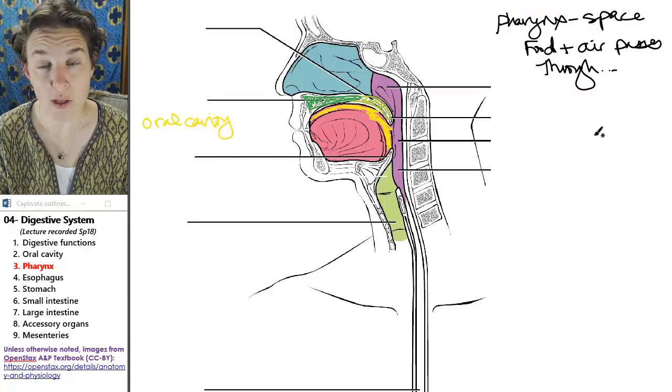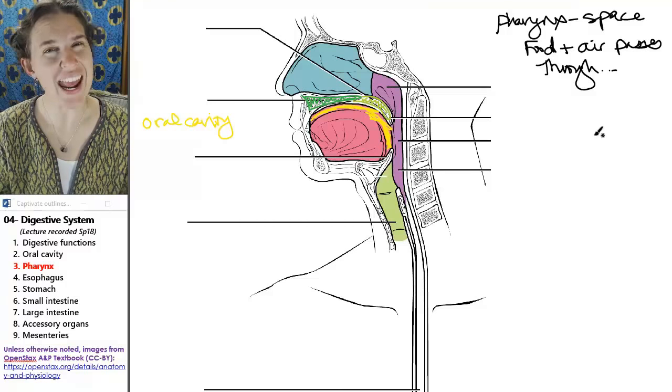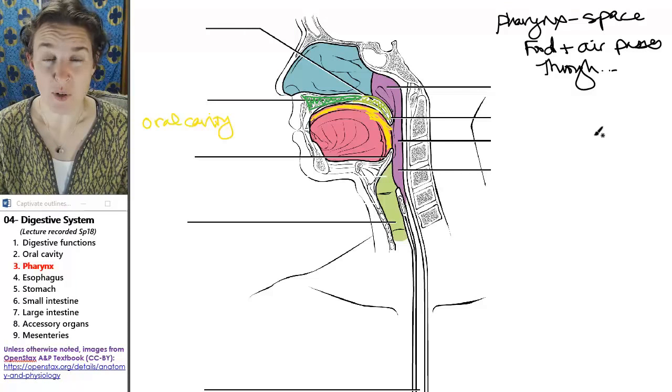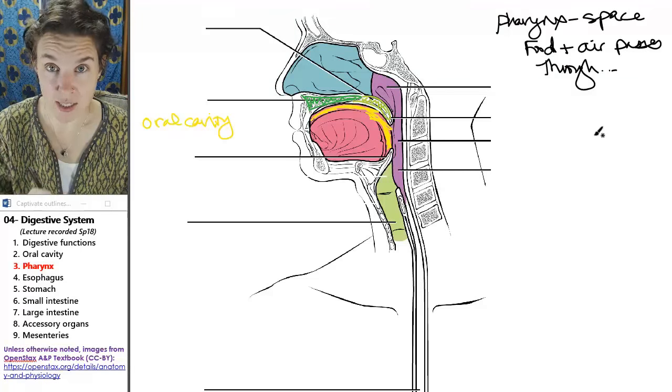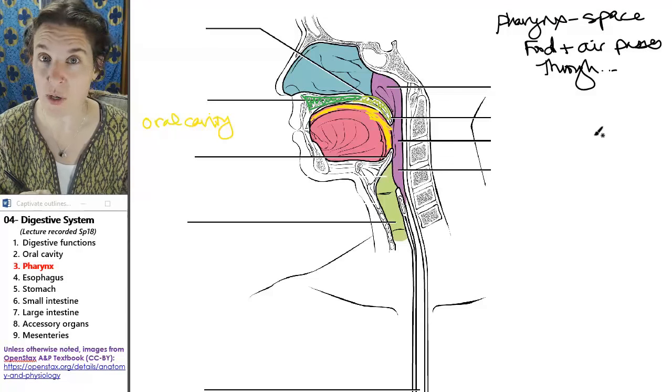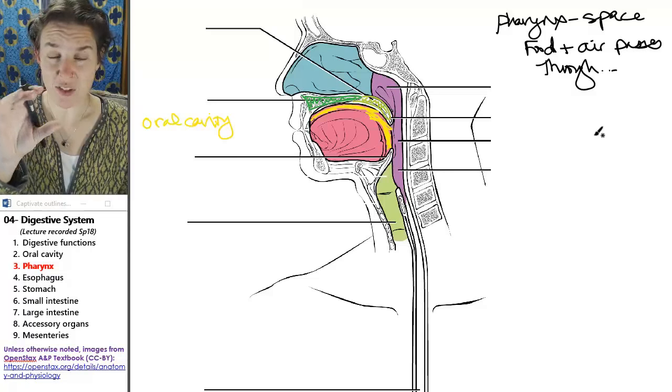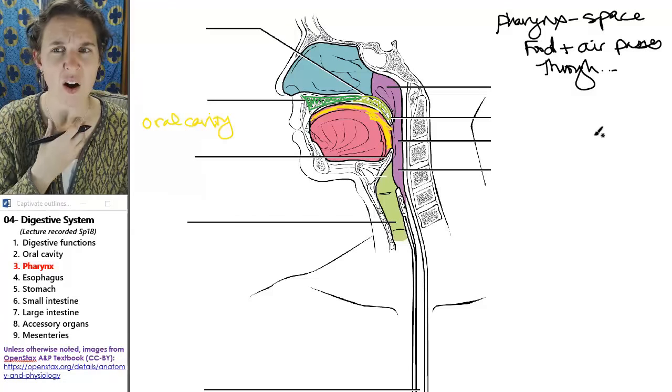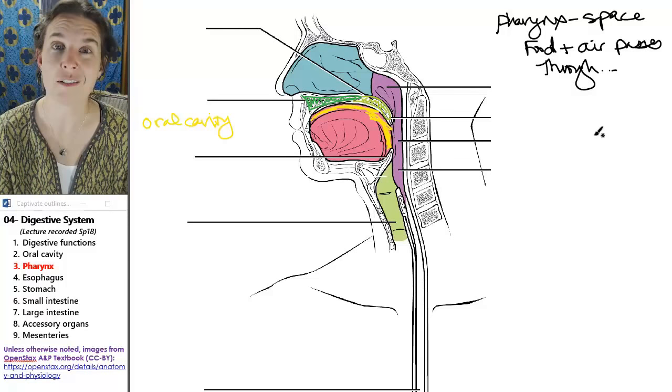So think about that for a minute. Food involves what system? The digestive system. And air, what system are we talking about? We're talking about the respiratory system. And we're going to have structures when we're talking about digestion that are also respiratory. Those are our pharynxes.